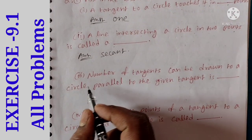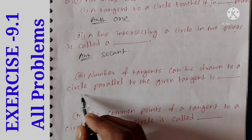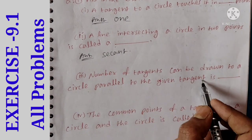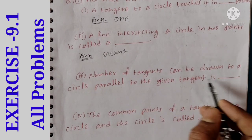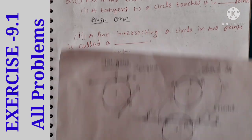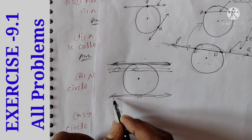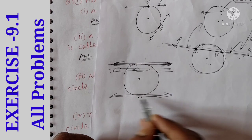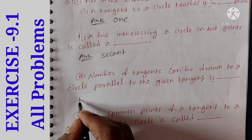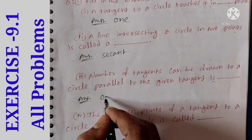Third one: a number of tangents can be drawn to a circle parallel to the given tangent. We have a tangent here — only one tangent. The answer to the third one is one.